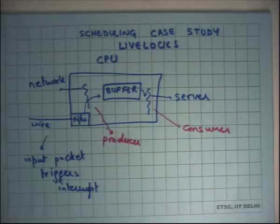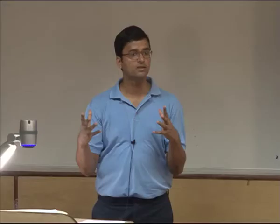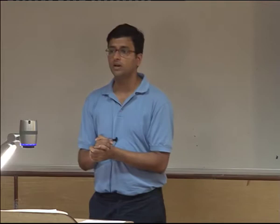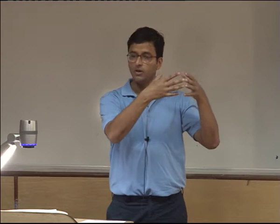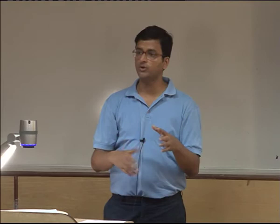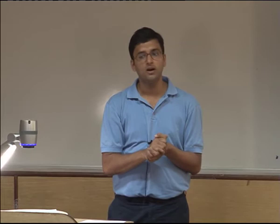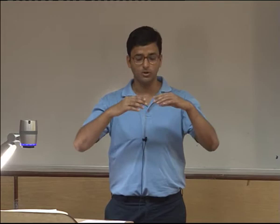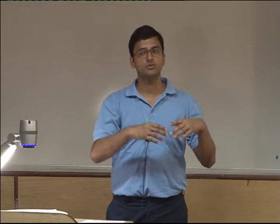We've been looking at scheduling and different scheduling policies. We talked about priority scheduling, and typical general-purpose systems use some sort of priority scheduling where they prioritize I/O-bound jobs or interactive jobs over compute-bound jobs or long-running batch jobs. That ensures high throughput and also very low response times. These priorities are not strict — priorities keep changing. If a job hasn't received CPU attention for a long time, its priority will gradually increase, so eventually its priority will become maximum, avoiding starvation.